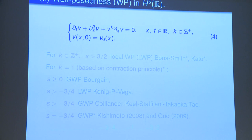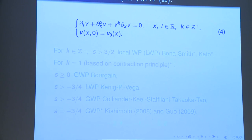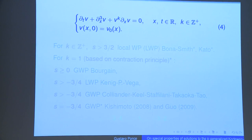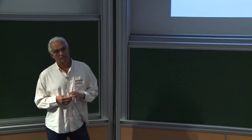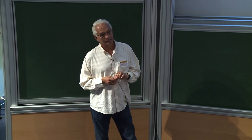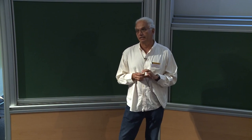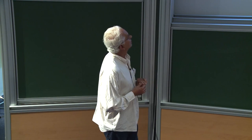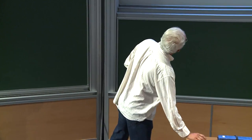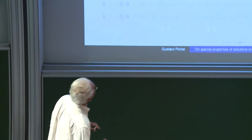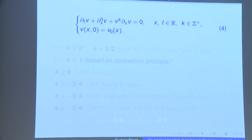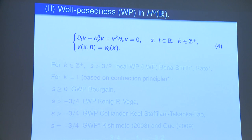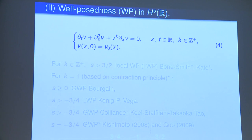Now we'll talk about well-posedness for the KdV. If you can prove well-posedness using the contraction principle, you automatically get that the map data-to-solution is smooth if the nonlinearity is smooth. If you don't use the contraction principle and you include a broader notion of well-posedness — for example, in the quasi-linear case — then it's very hard to prove that. Sometimes you have to give up proving everything in the best space, and we will return to that at the end of the talk.